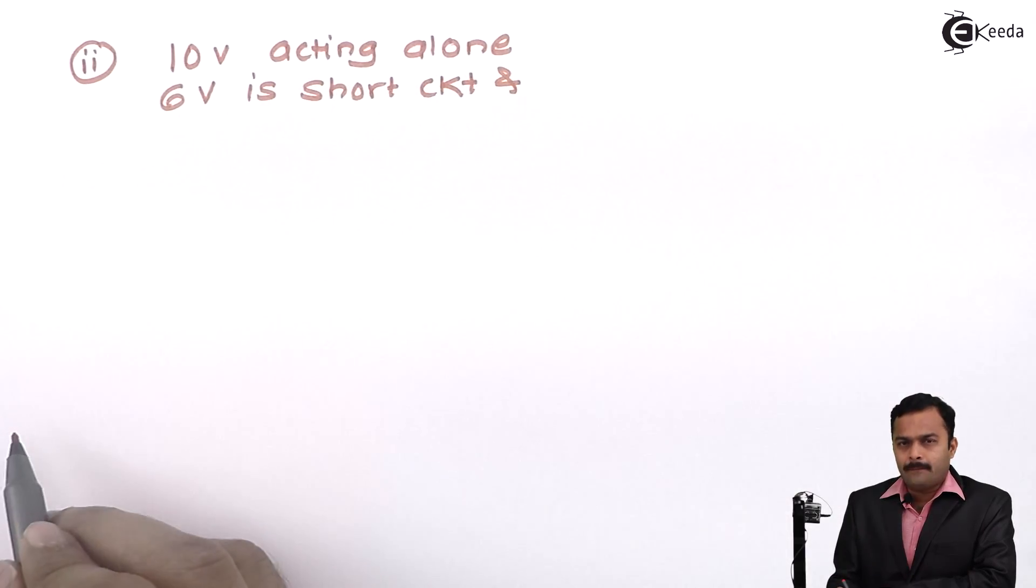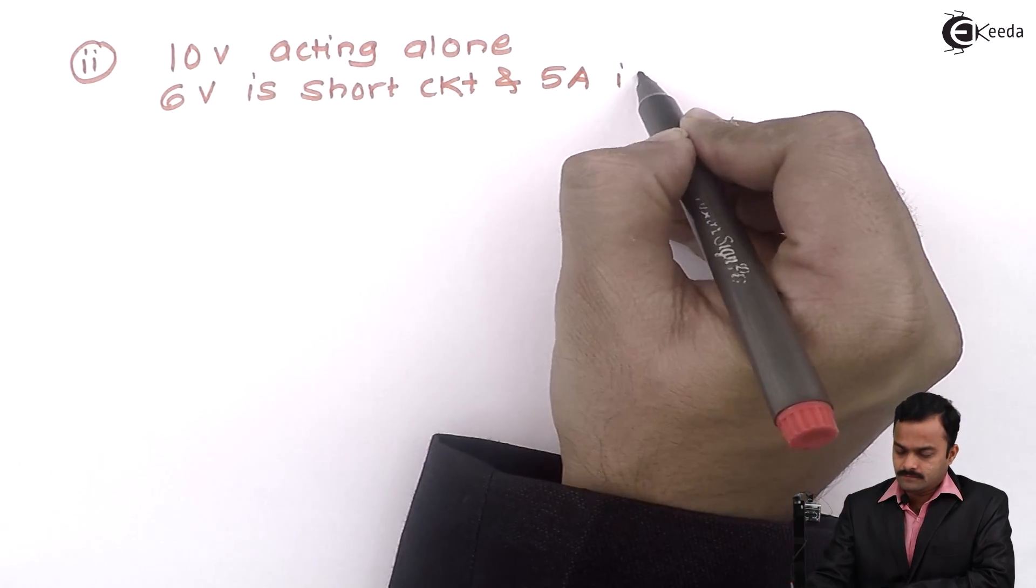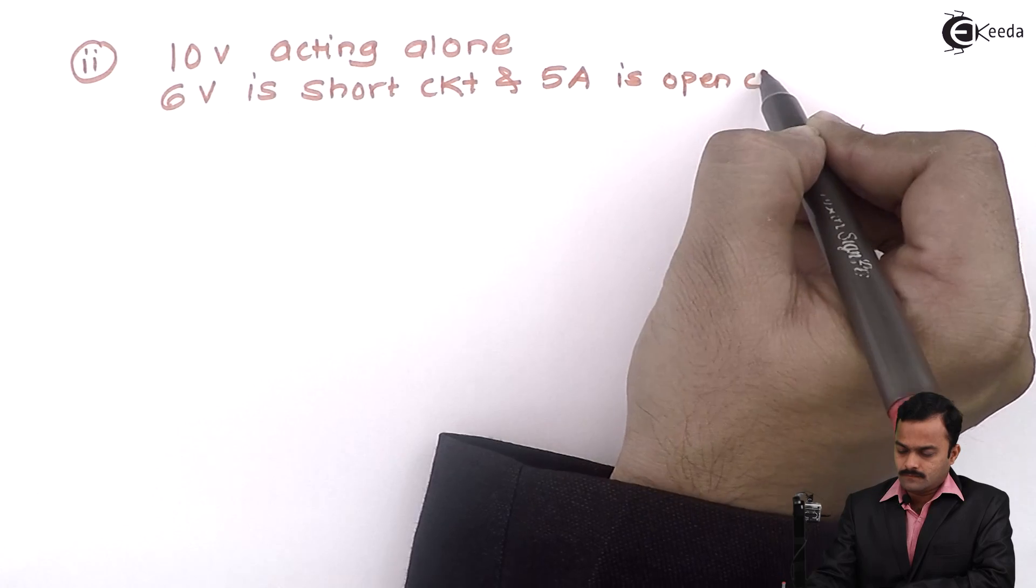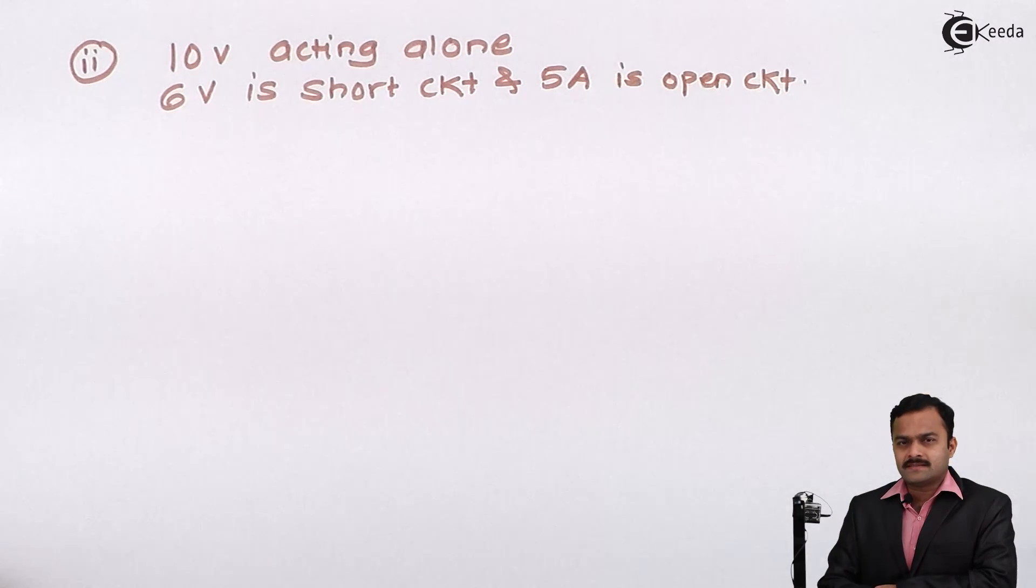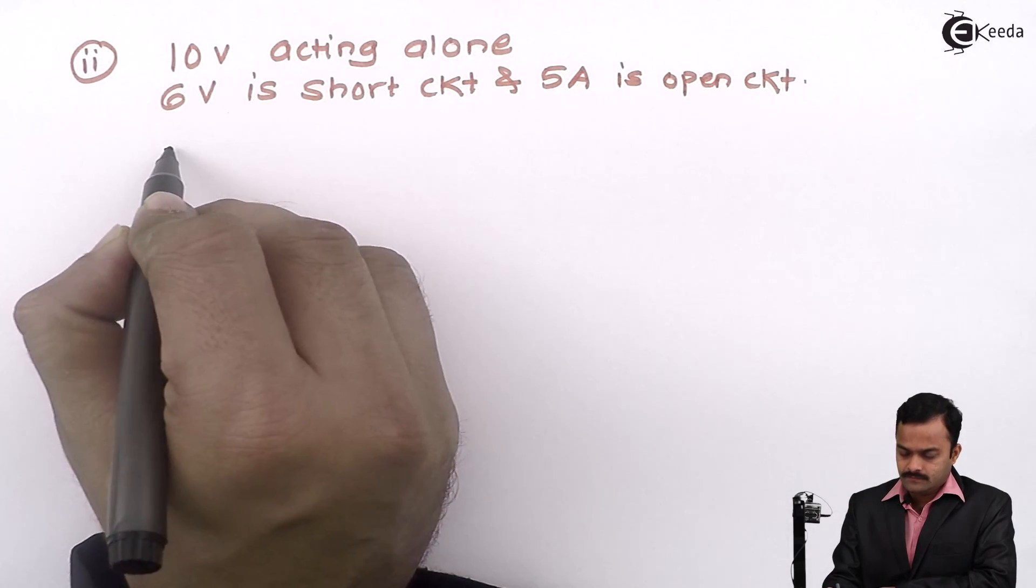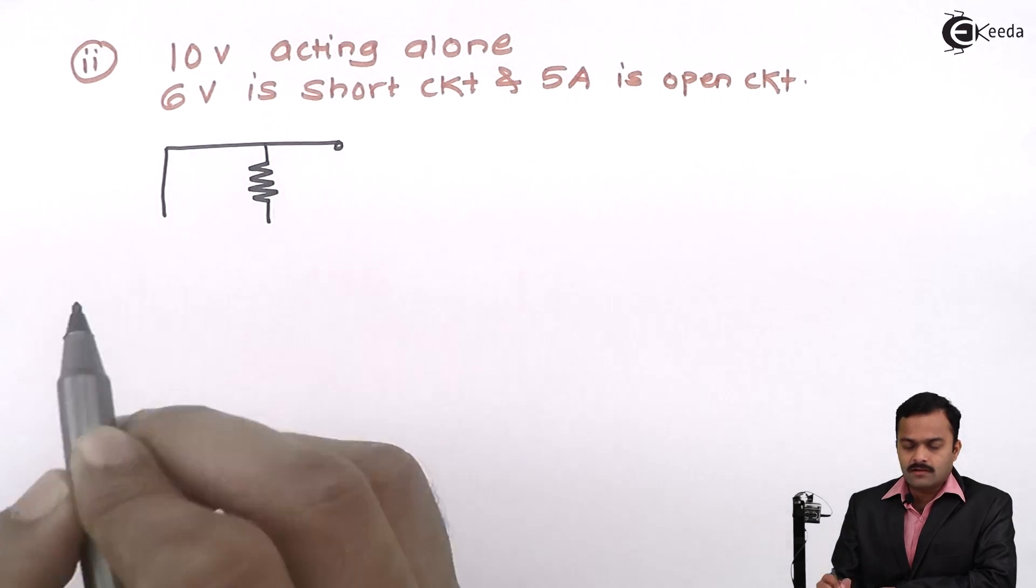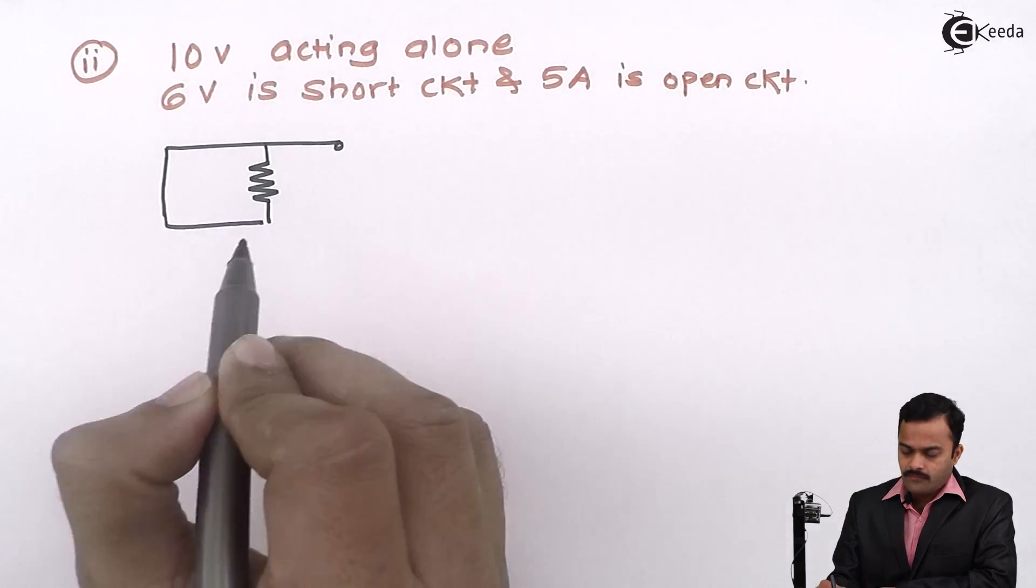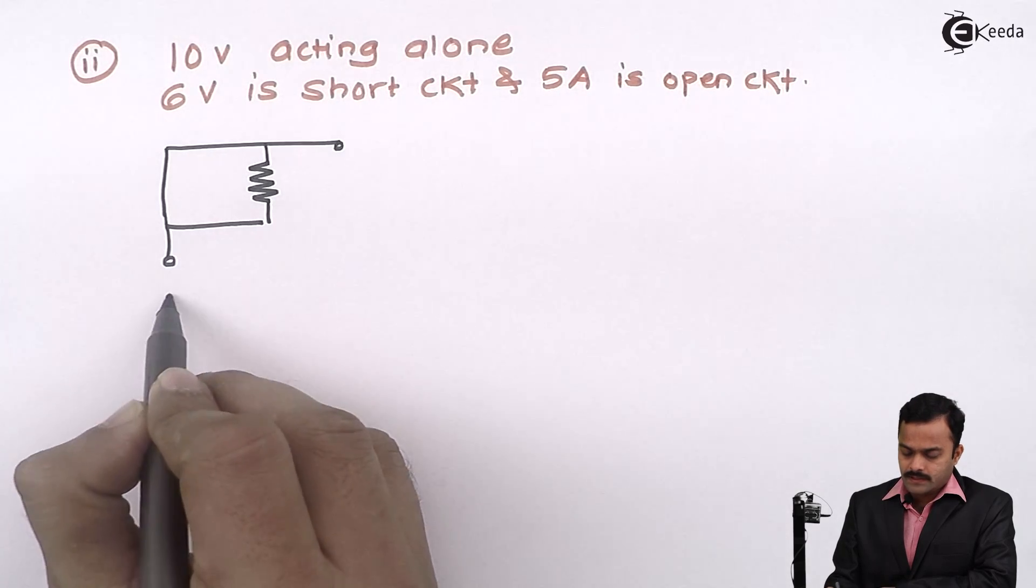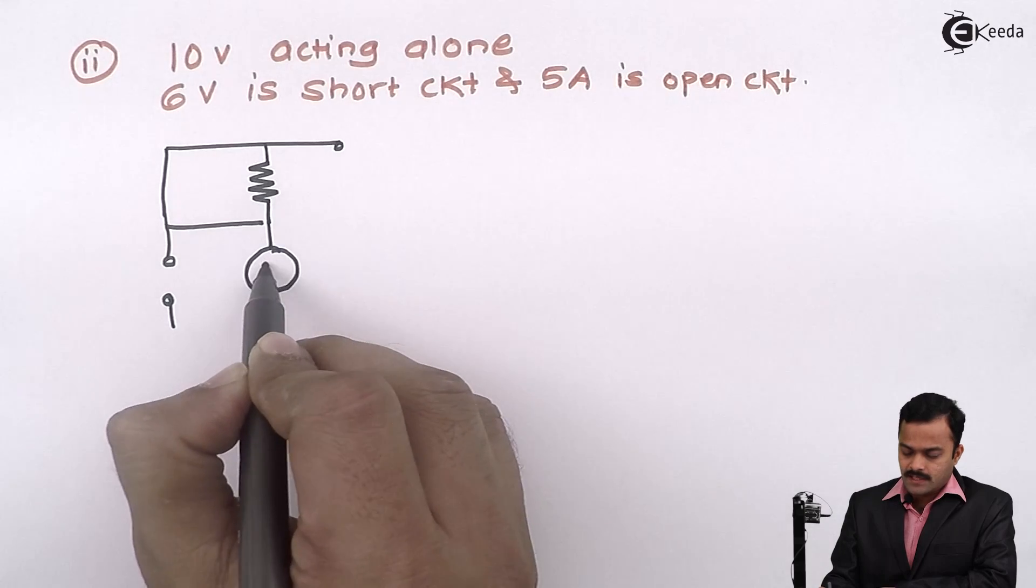And 5A is a current source, we need to open circuit it. Because of this, there is modified circuit. So 6V is short circuited. Once again, we are not touching resistance at all, so that will be as it is. 5A open circuit it, and only source acting this time is 10V.